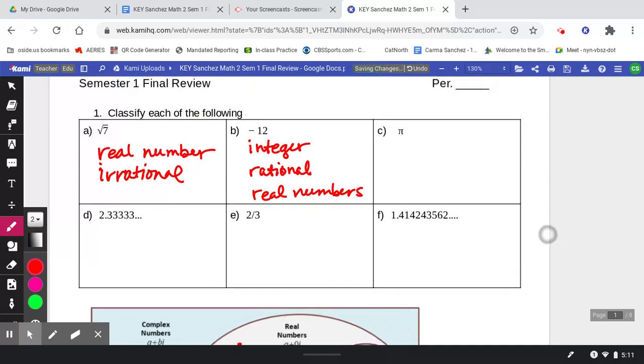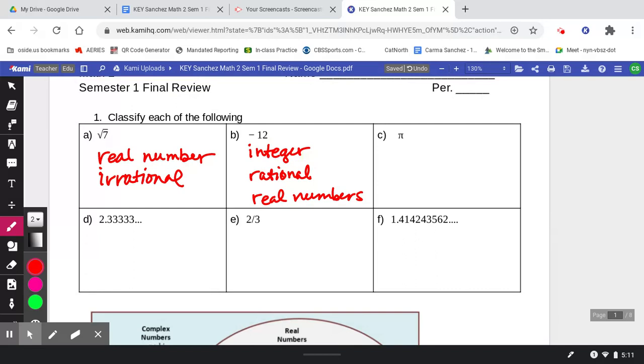If we solved a quadratic equation and you got -12 as one of the roots, you would say that was a real root because it is a real number. All right, let's talk about pi.